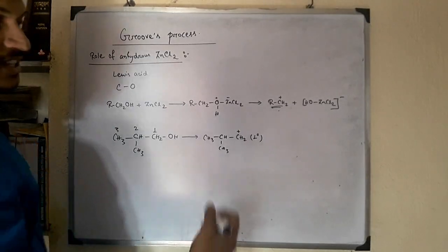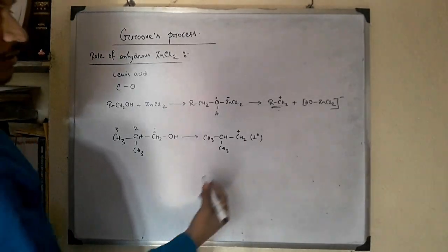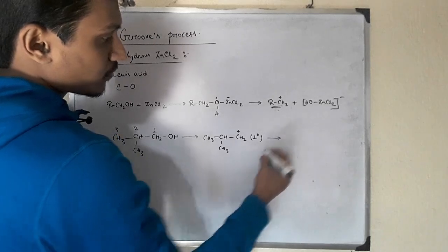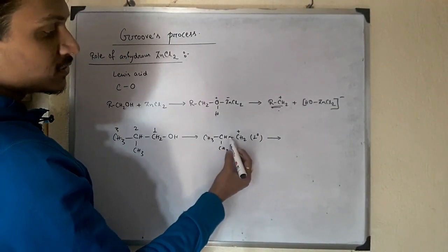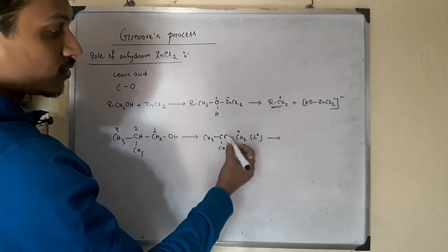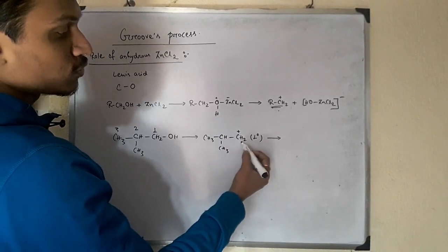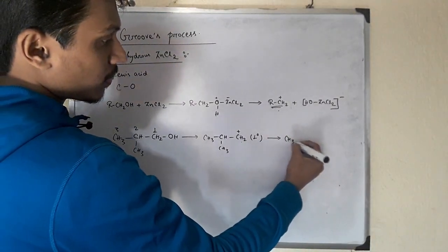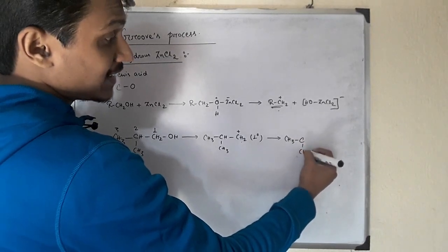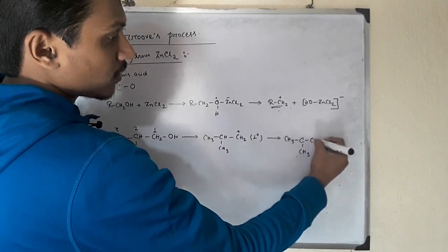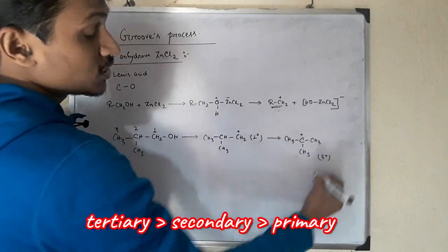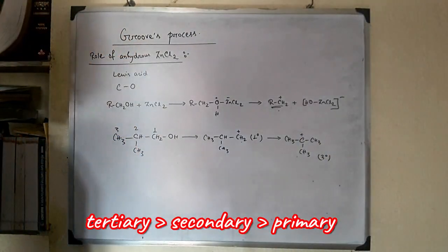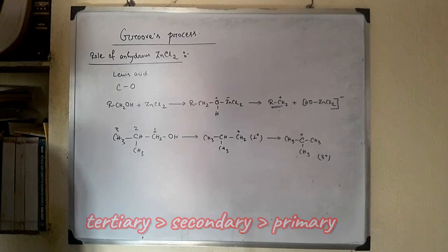Rearrangement occurs. This carbocation rearranges to become more stable. This hydrogen shifts with a pair of its electrons from this position to this position. This is called the hydride shift. We get a tertiary carbocation, which is more stable than the primary carbocation.